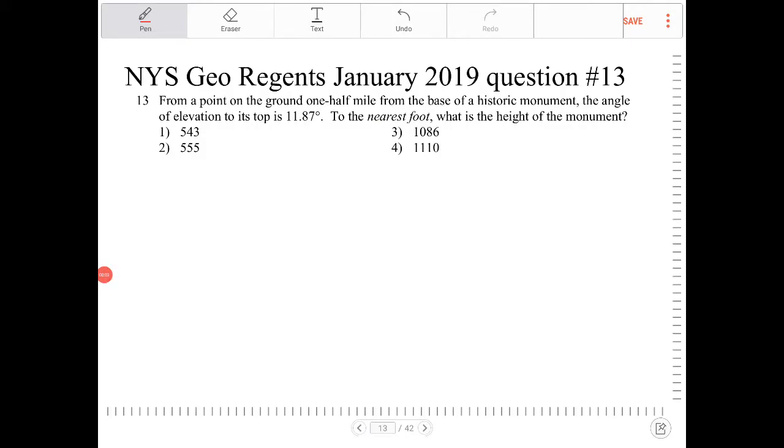From a point on the ground one-half mile from the base of a historic monument, the angle of elevation to its top is 11.87 degrees. To the nearest foot, what is the height of the monument?